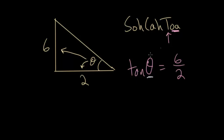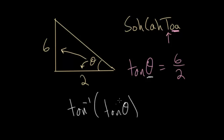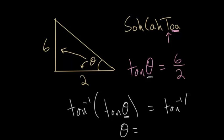Now that we have our trig ratio set up, we want to solve for theta. Like the two previous problems, we're going to use an inverse function. We take the inverse tangent of each side of the equation. On the left-hand side, putting the tangent of theta inside the inverse tangent leaves just theta — the inverse and the function cancel each other out. On the right-hand side we have the inverse tangent of 6 over 2, which is 3. Evaluating that with the calculator, we find that theta is approximately 71.57 degrees.